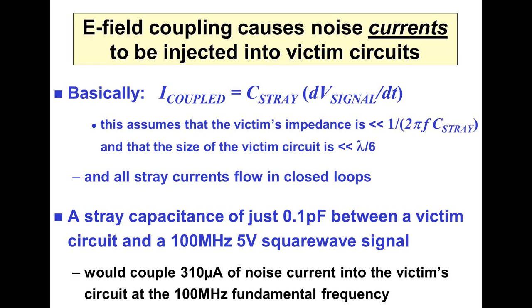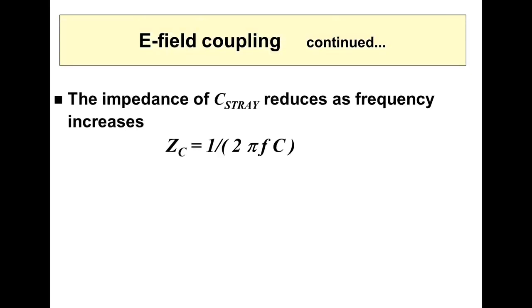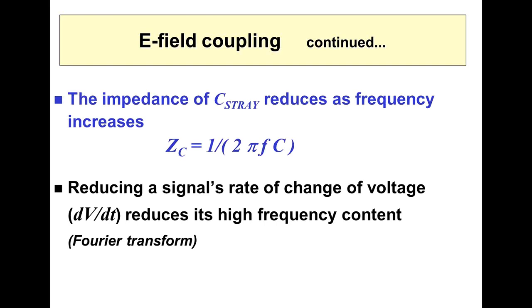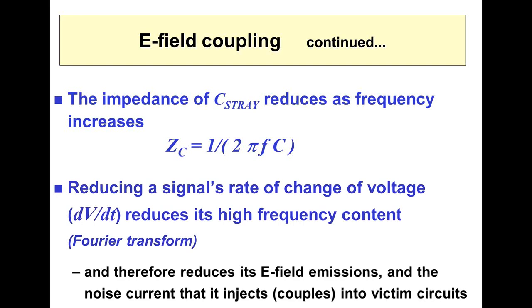The air makes a very good conductor for radio frequencies. Another way of looking at it: the electricity, the signal, doesn't stay in the wire — it spreads around it and can couple with other conductors. The impedance of our stray capacitance reduces as frequency increases (1 over 2πfC), and reducing the signal's rate of change of voltage (dV/dt) reduces its high frequency content. So the slower we make the rate of change of voltage, the less electric field emissions we get, and the lower the noise current coupled into victim circuits.